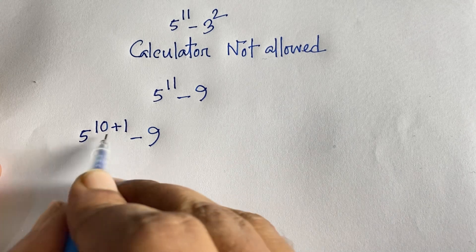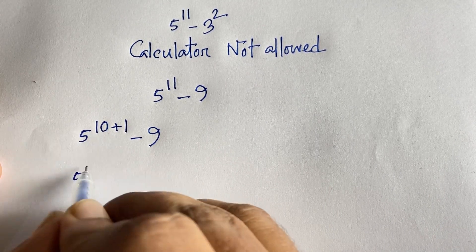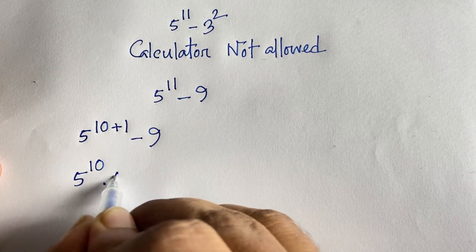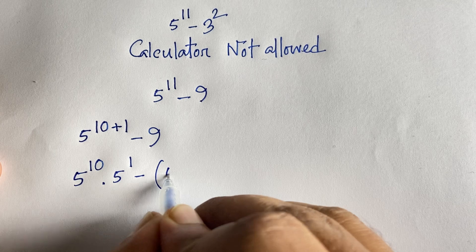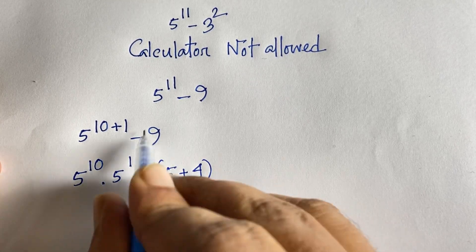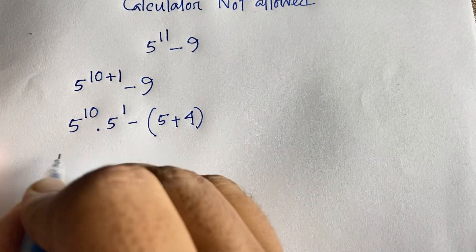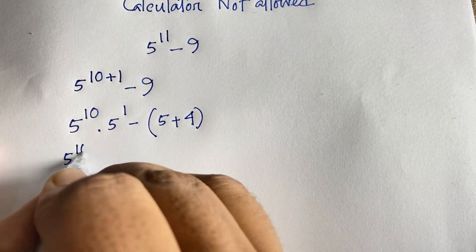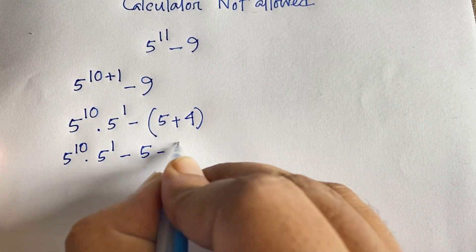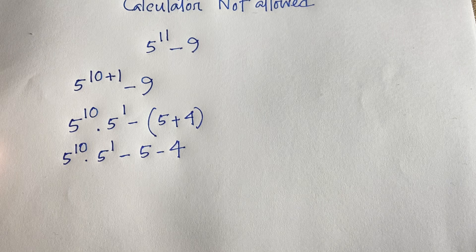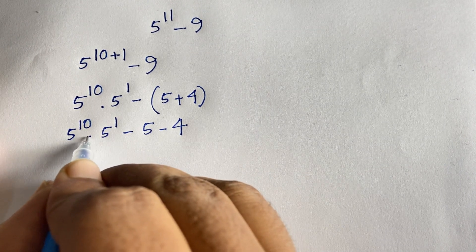Using exponent rules, this expression becomes 5 to the power 10 times 5 to the power 1, minus 9. Now 9 can be written as 5 plus 4, so the expression becomes 5 to the power 10 times 5 to the power 1, minus 5 minus 4.